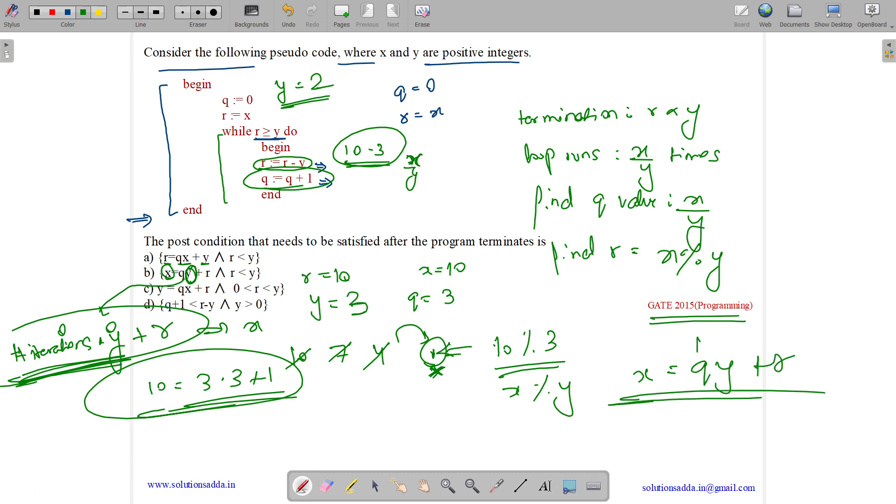It is nothing but quotient, dividend, divisor and remainder. So answer is option b.